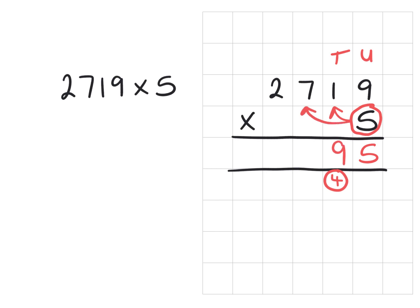Then we have 5 lots of 7 hundreds. So 5 times 7 is 35. Place your 5 and then carry your 3 into the thousands column.